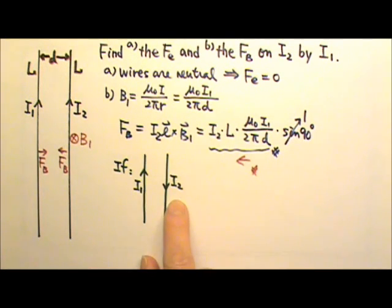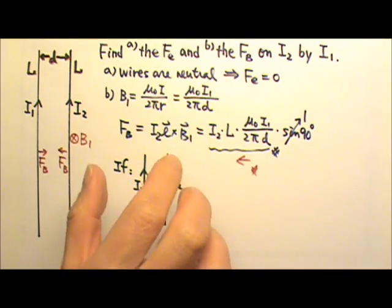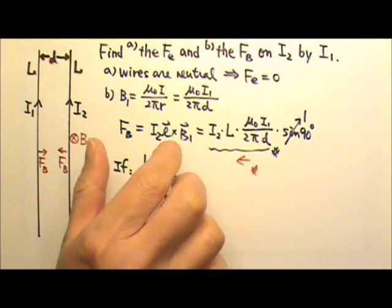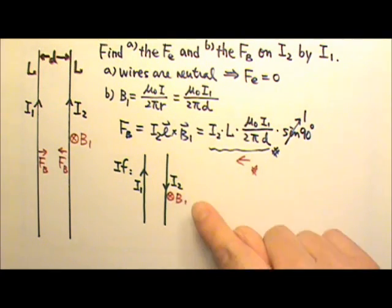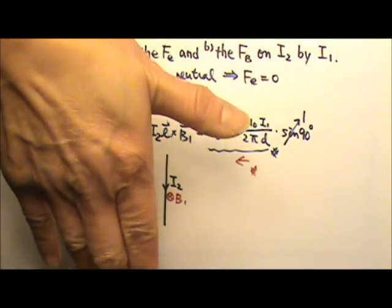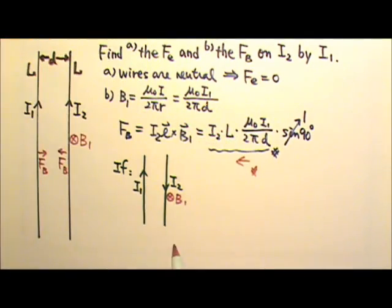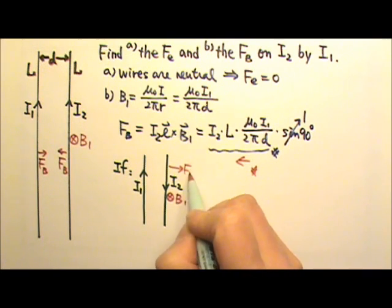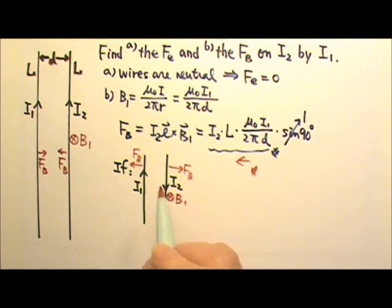If the two currents are in opposite direction, they would repel each other. Because if I use the thumb to follow I1, the magnetic field produced by I1 on the right side goes into the paper. So it's B1. And then we put this I2 in this magnetic field. I can do L cross B and my thumb goes to the right. So the magnetic force on I2 goes to the right. And that one will be opposite direction. So the two currents in opposite directions would repel each other.